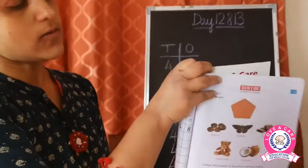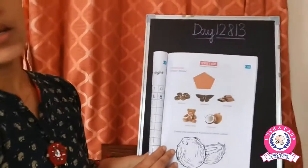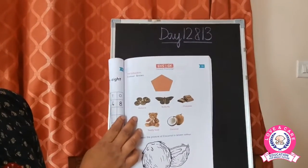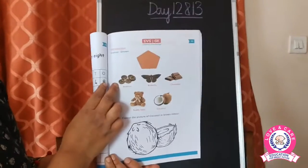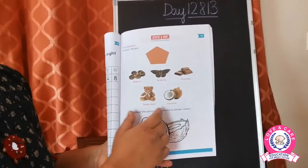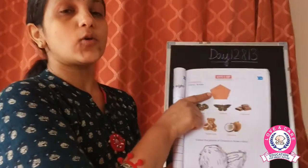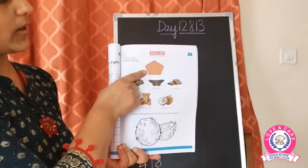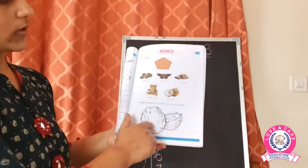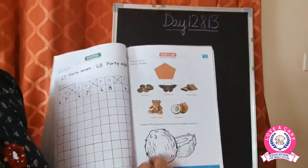The next is the EBS worksheet where we are learning one more new color — the color brown. You are given pictures that are brown in color. Things that are brown: buttons, butterfly, chocolate, teddy bear, and coconut — the outer shell of a coconut is brown in color. You have also been given a shape. Are you able to recognize this shape, children? This is a pentagon shape, and the pentagon is also brown in color. Now color the picture of a coconut in brown color — just color it the same way as shown above.